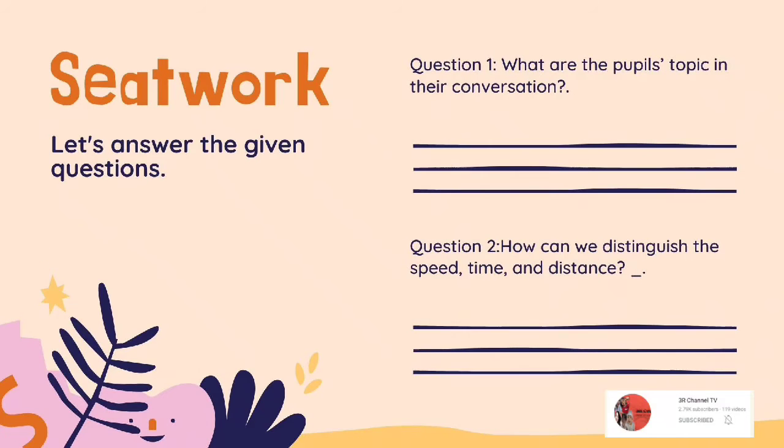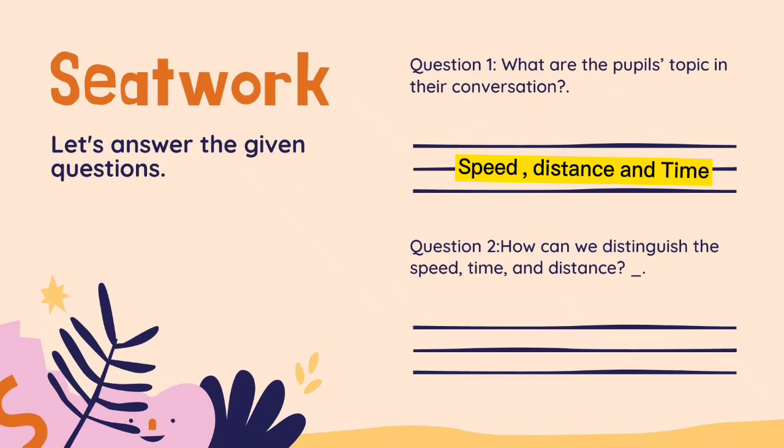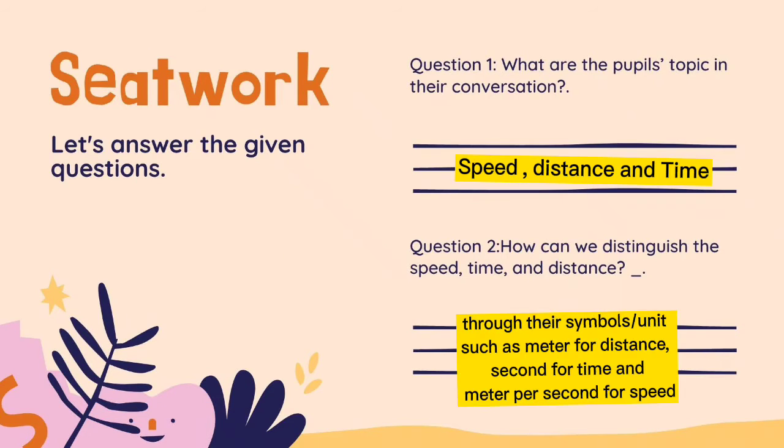Let's answer the given questions. Question number 1: What are the pupils' topic in their conversation? Answer: Speed, distance and time. Question number 2: How can we distinguish the speed, time and distance? Answer: Through their symbols or units such as meter for distance, second for time and meter per second for speed.